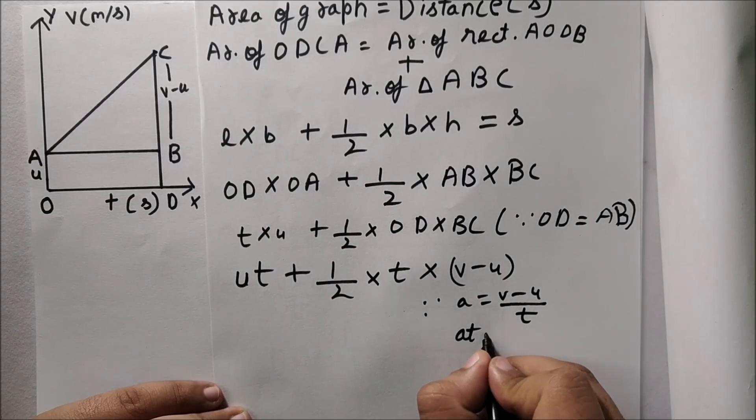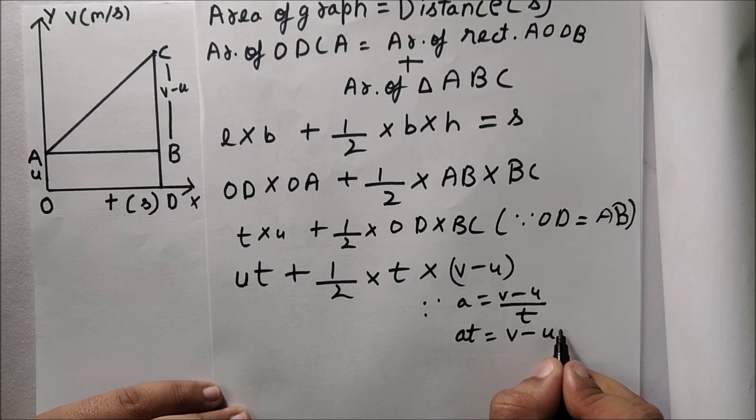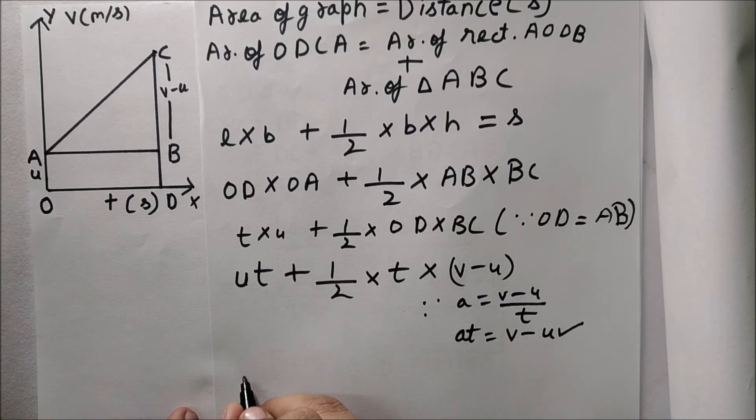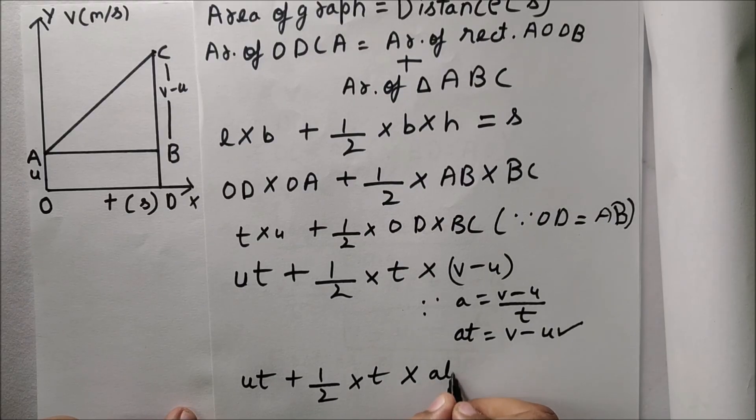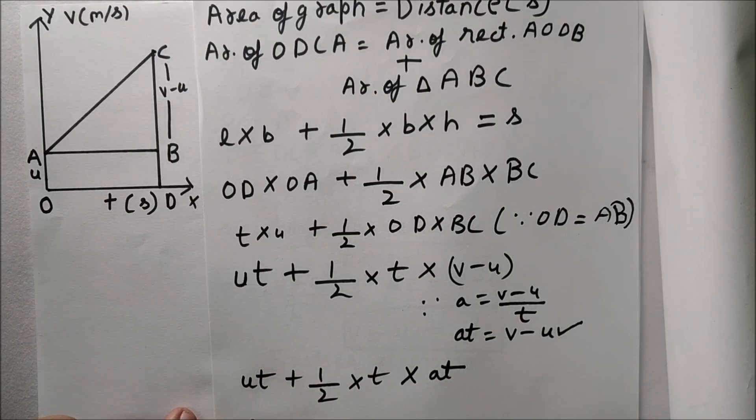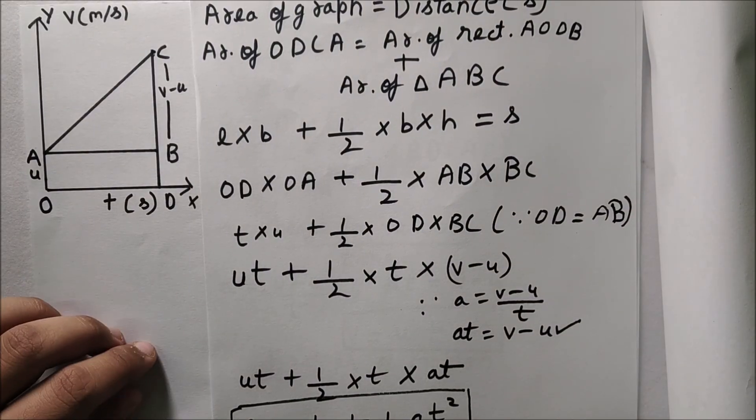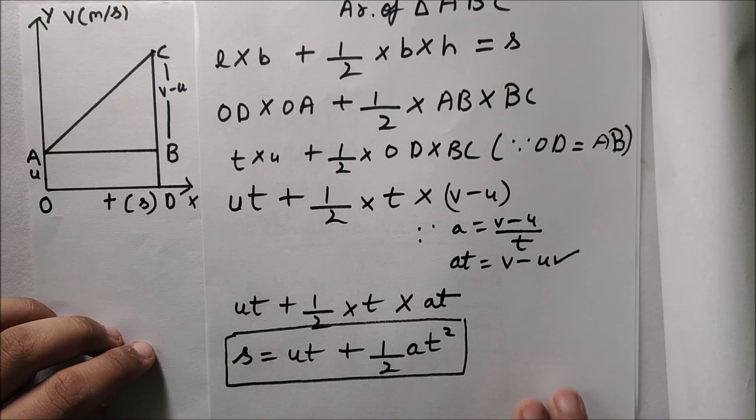Now as we know that a equals to v minus u upon t, so at equals to v minus u. So we can substitute v minus u by at. So we can write at instead of v minus u. Here is our second equation of motion, that is s equals to ut plus half at square.